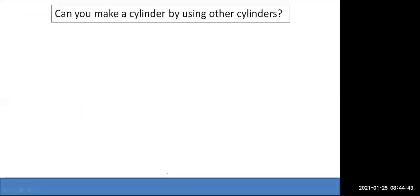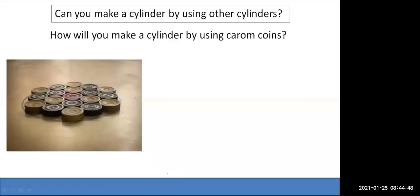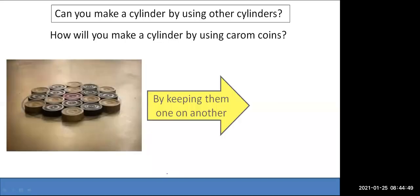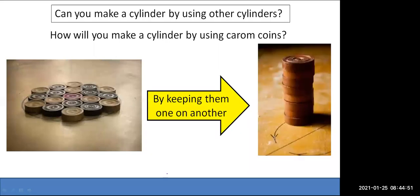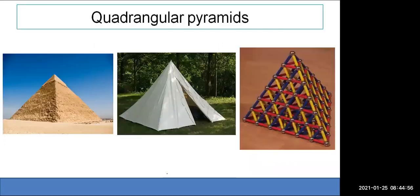Can you make a cylinder using other cylinders? Yes — a big cylindrical shape can be formed by stacking small cylinders.